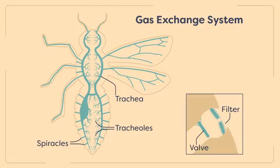In some insects, parts of the tracheal network may be enlarged to form air sacs, which are flexible structures with multiple functions. For instance, the air sacs act as a reservoir and their expansion and contraction can help increase the volume of air flowing through the trachea and allow more efficient distribution of oxygen. Air sacs are also involved in sound production by some insects, such as cicadas. Finally, they may be compressed to provide room for the growth of internal tissues before the insect's next molt.